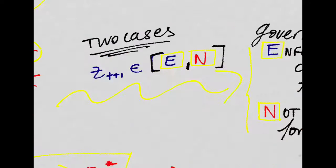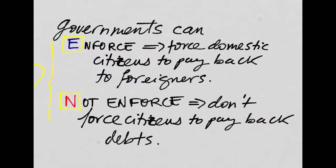Now, imagine there are two cases. On the one hand, governments can enforce and force their citizens to pay back foreigners. And in the other case, governments cannot enforce and will not have citizens pay back the debts to foreigners.